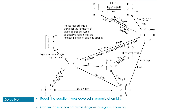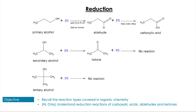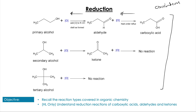Now that you've done that, SL students there are some questions — Synthetic Routes 1 — which you'll want to be doing. HL students, you're going to start here. Just a reminder for HL students of the oxidation of alcohols we did at the beginning of the unit — the difference between primary, secondary, and tertiary oxidations. Reduction is going to be looking at going in the opposite direction.